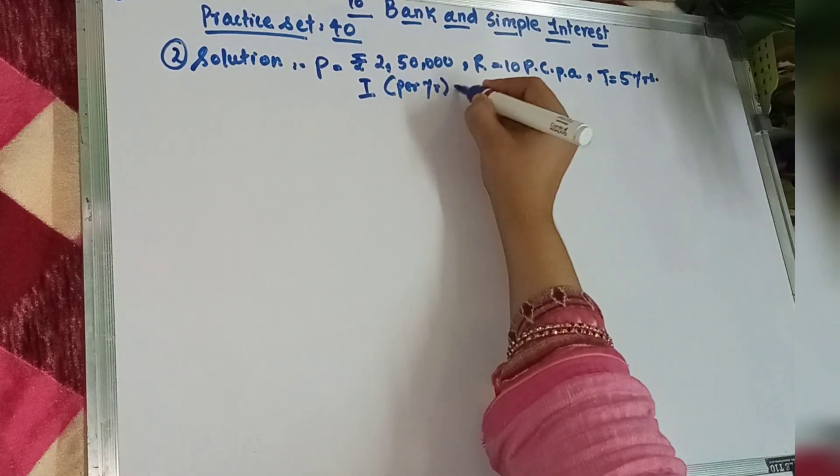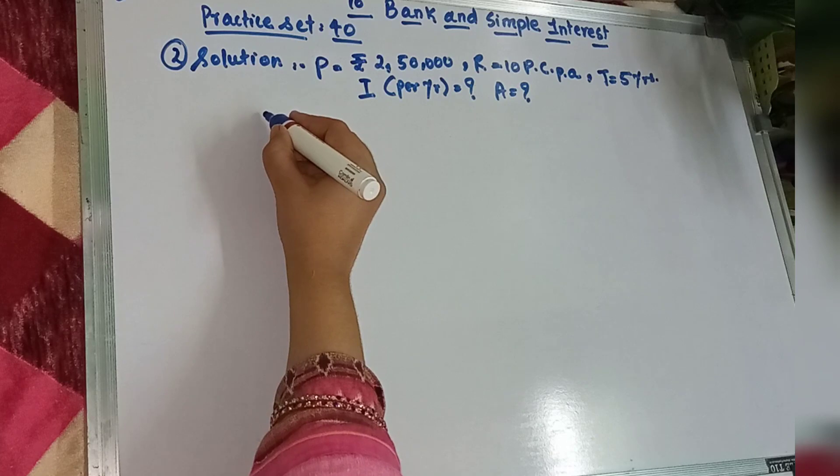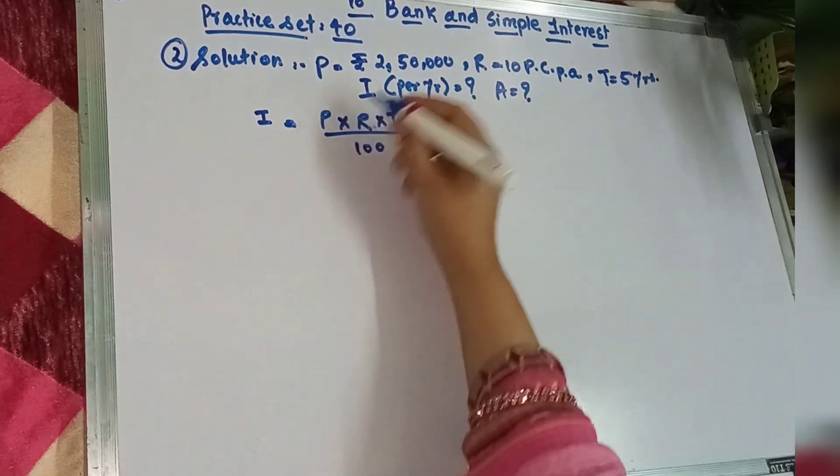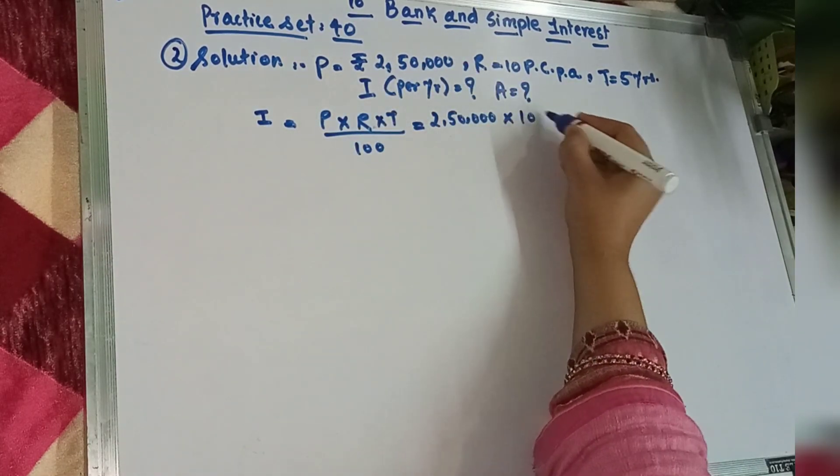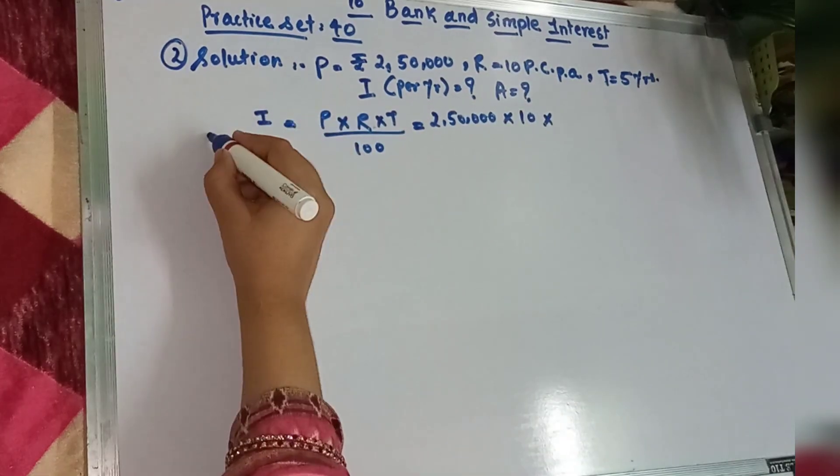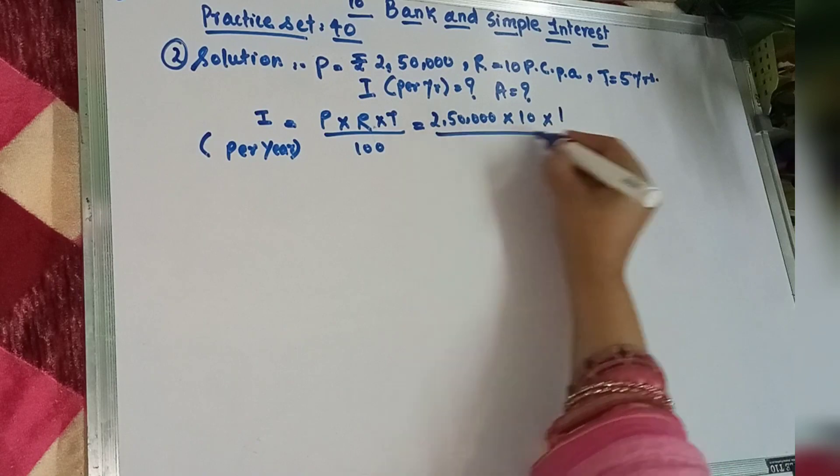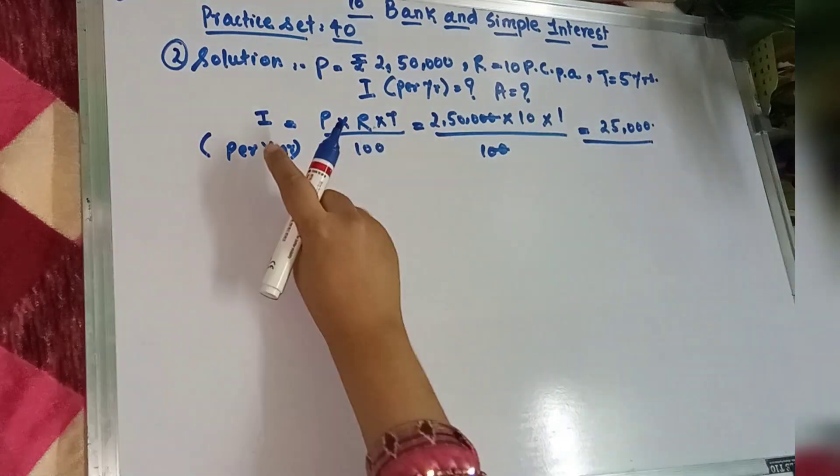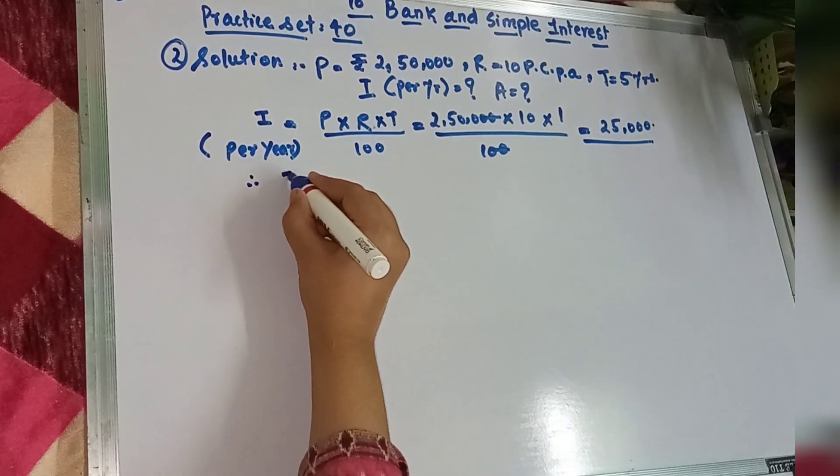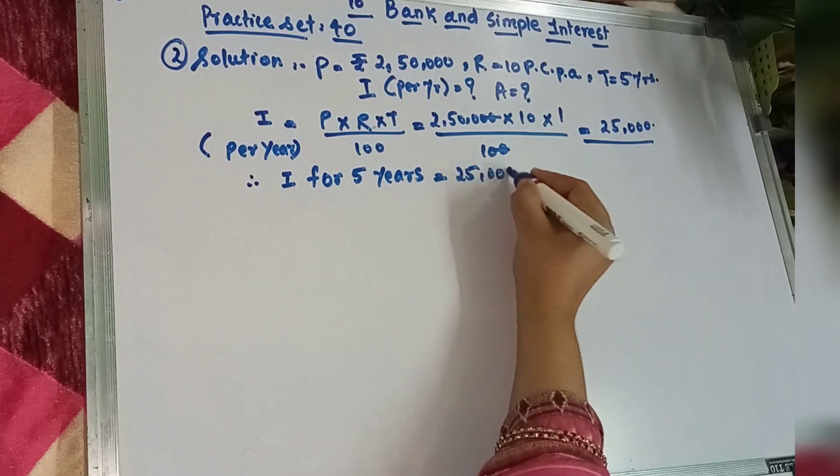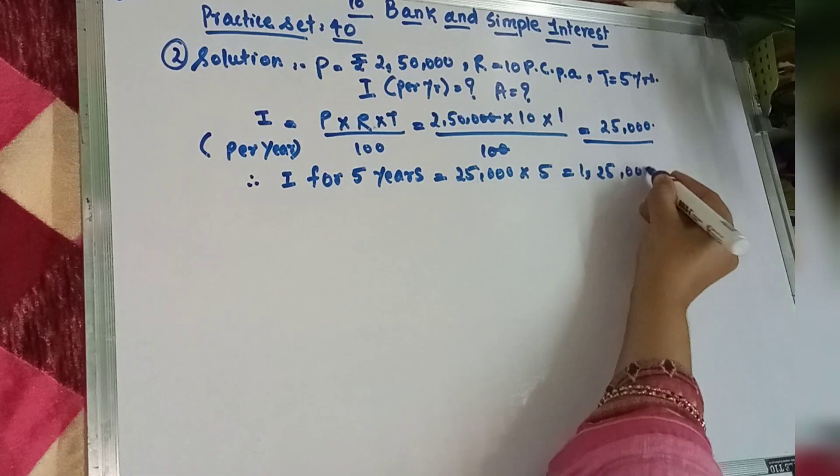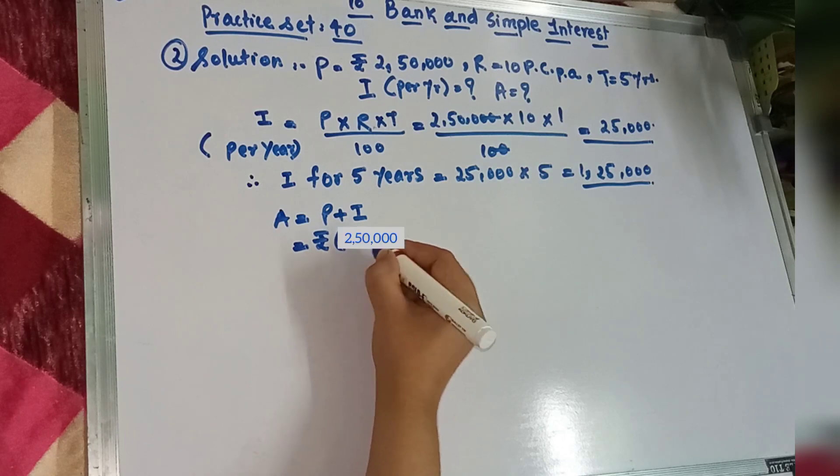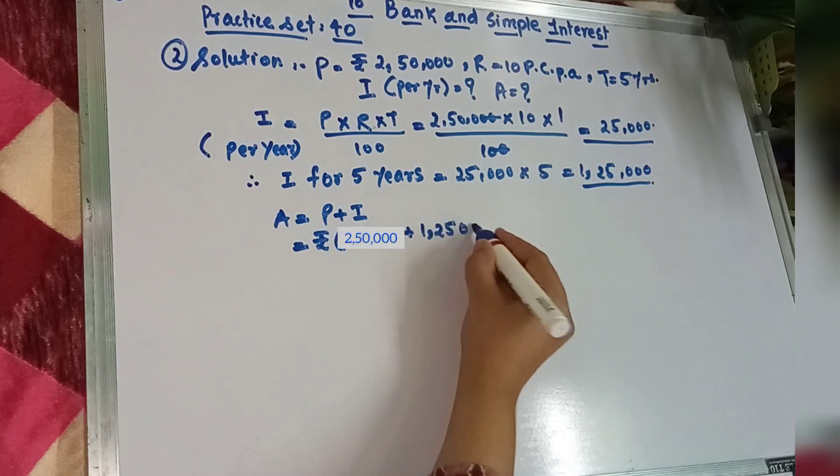Then humko yearly, 1 year ka nikalna hai. Then humko 5 years ka nikalna hai. To usko 5 se multiply karenge. 25,000 ko 5 se multiply karenge. To iska answer hai ga 1,25,000. Then aapko iska amount nikalna hai. To A is equal to P plus I. Principal ki value 2,50,000 plus interest 1,25,000.